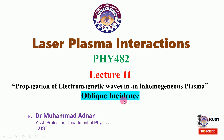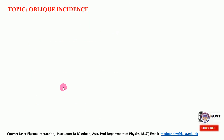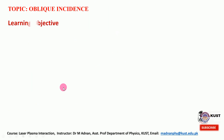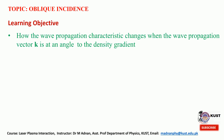Previously we have discussed the propagation of electromagnetic waves for the case of normal incidence. Now I will give the learning objectives. At the end of this lecture, the student will understand how the wave propagation characteristics change when the wave vector k is at an angle theta to the density gradient.